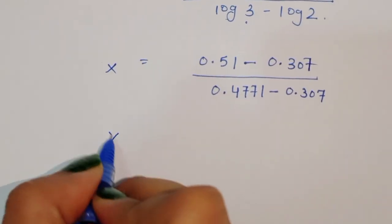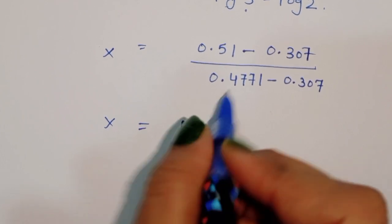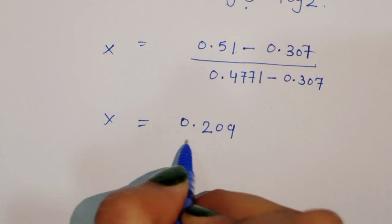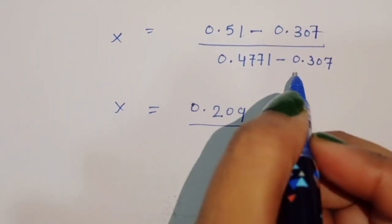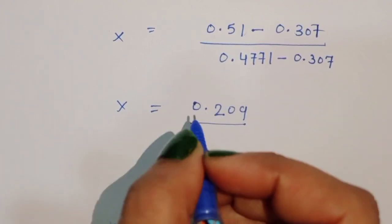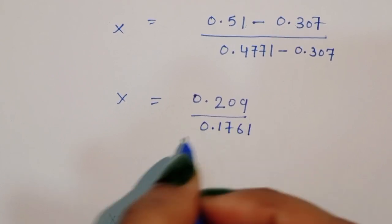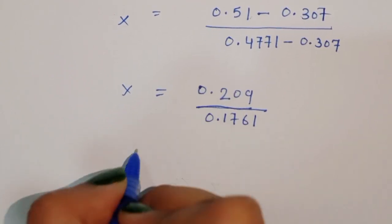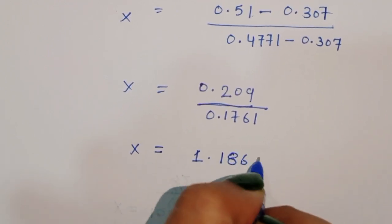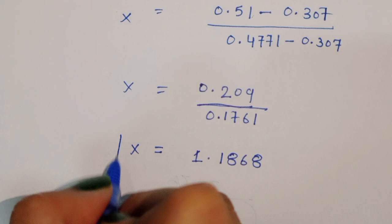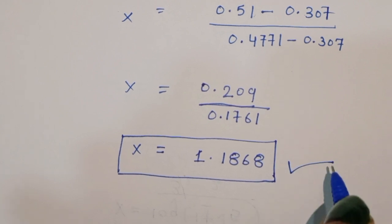So x equals 0.209 divided by 0.1761, and finally when we divide, we get x is equal to 1.1868. This is the final value and the solution. Thank you.